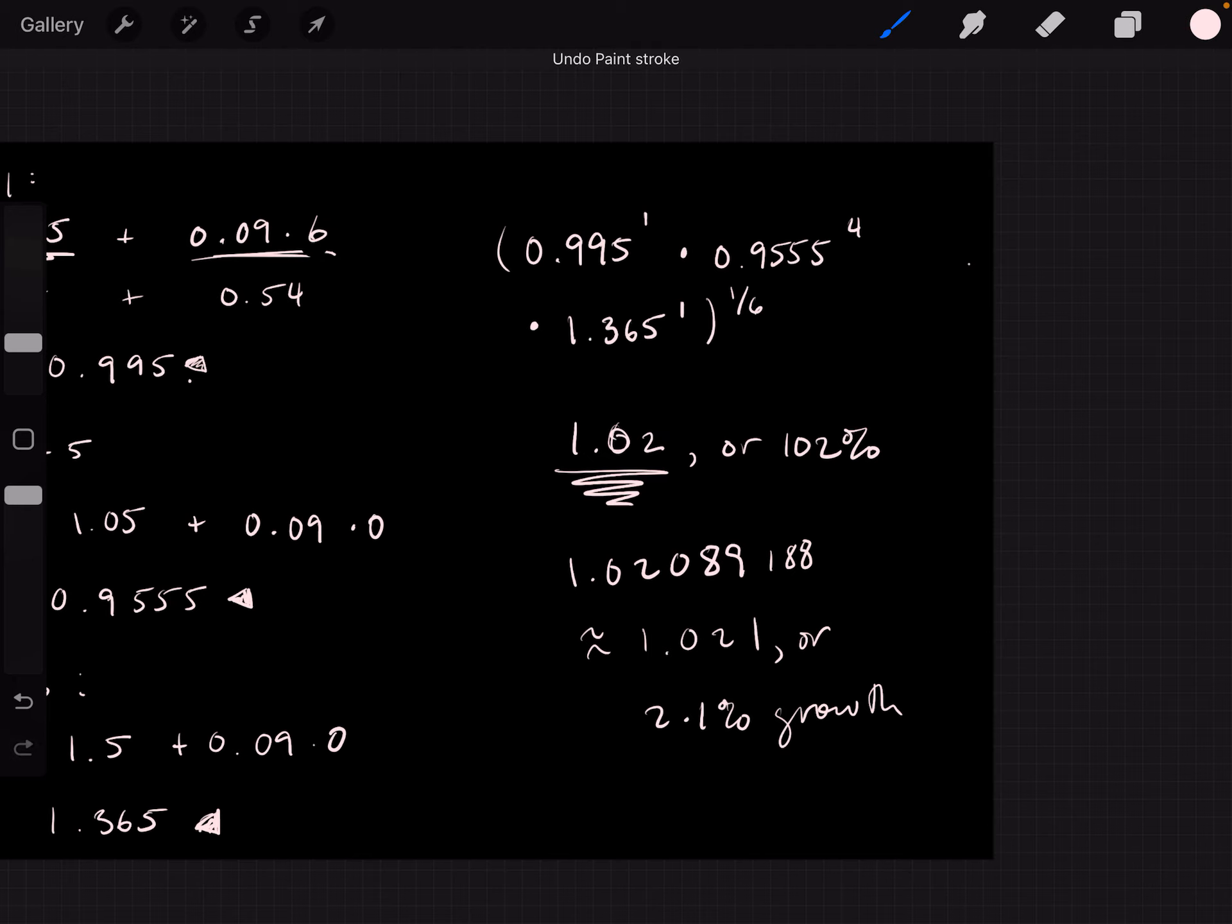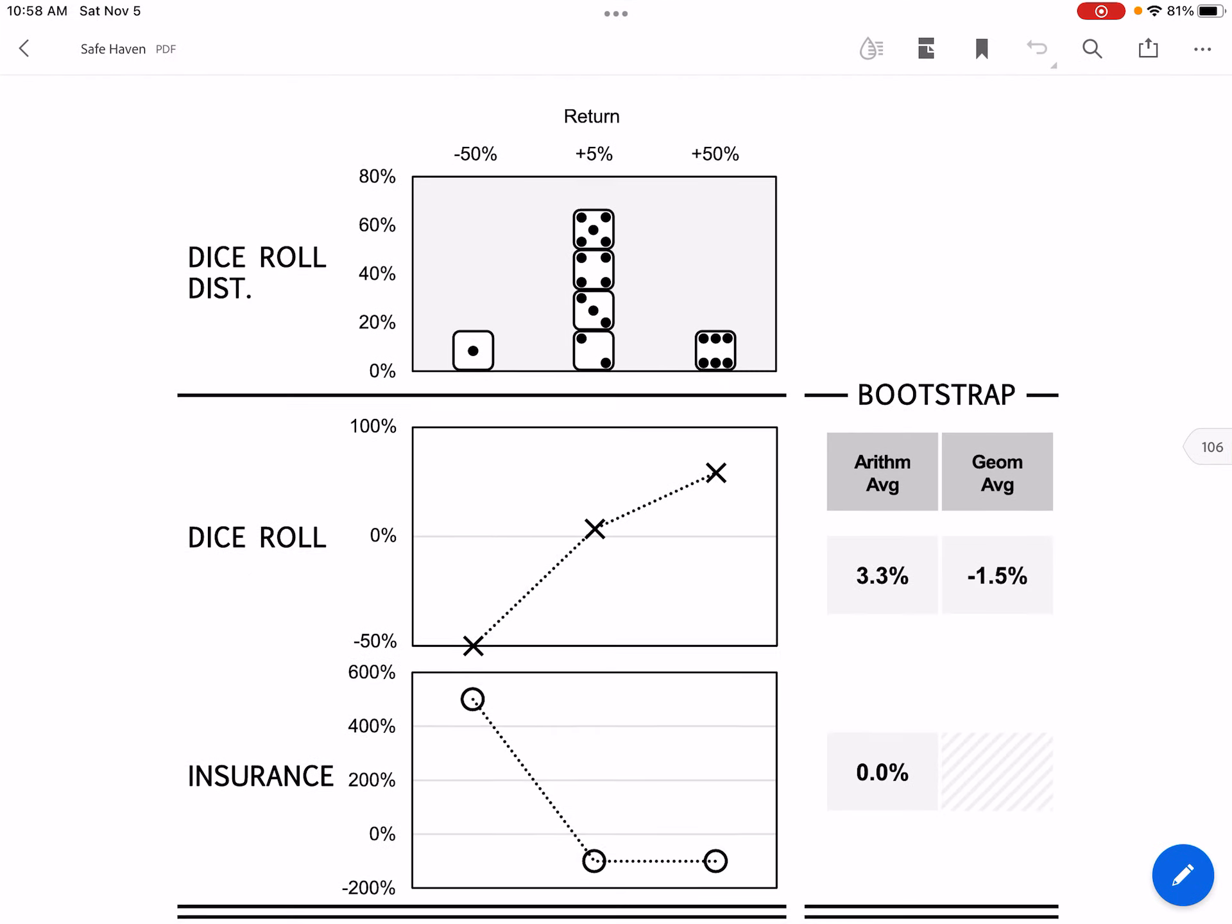So if you just take the geometric average of all 6 of the dice faces, then what you get is 1.02 for your geometric average, or 102% growth. And the full number is actually 1.0208, which is equal to 2.1% growth. And where have we seen that before?